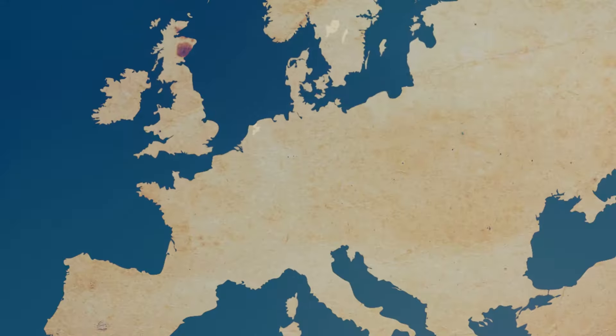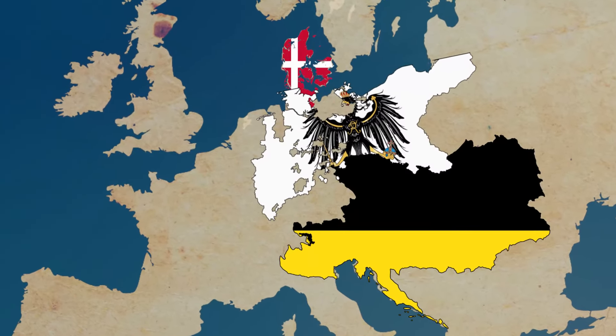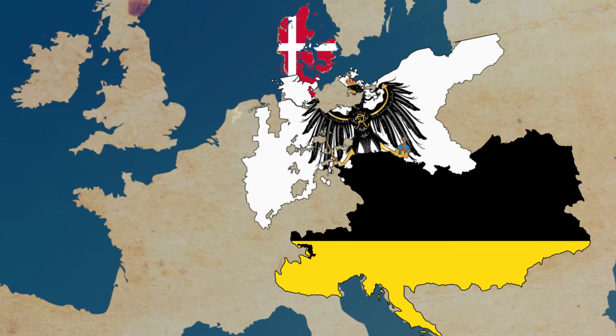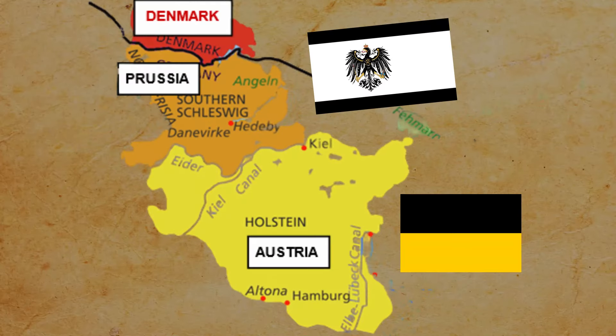And it turns out, in 1864, Denmark had declared that some German states were actually Danish territories. Prussia and Austria united against Denmark and after a few wars, they conquered those territories and divided them among themselves. Prussia got Schleswig and Austria got Holstein. But the Austrians didn't really like this division of territories and were dissatisfied with the Prussians.